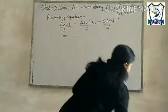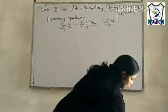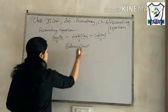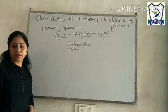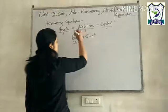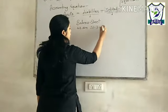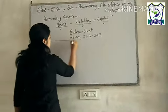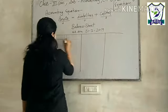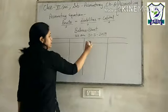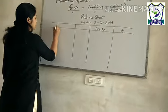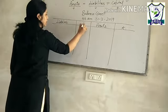So to understand the accounting equation, you should know about the balance sheet. I have told you about the balance sheet in the previous chapter. Balance sheet is a statement which is made at the end of any accounting year. For example, as on 31st March 2019. It is T-shaped in format.